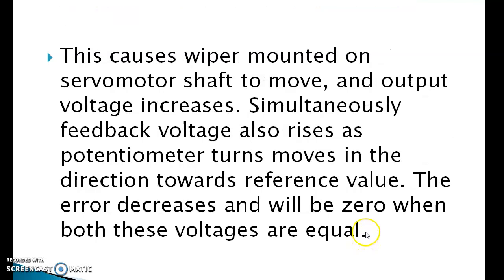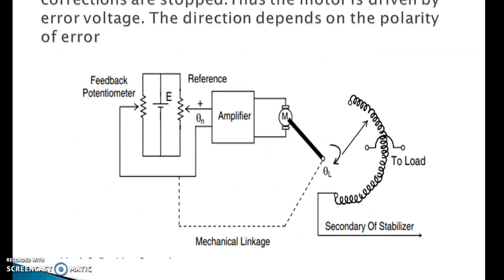Suppose reference voltage is higher than feedback voltage. This drives the motor in one direction. This causes wiper mounted on the servo motor shaft to move. Output voltage increases, and simultaneously feedback voltage also rises as potentiometer wiper moves in the direction towards reference value. The error decreases and will be zero when both voltages are equal. At this moment motor stops rotating and further corrections are stopped.